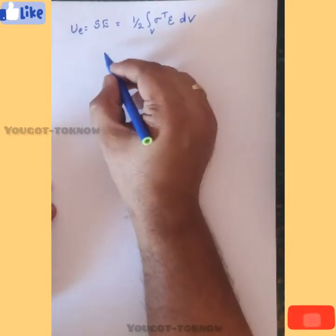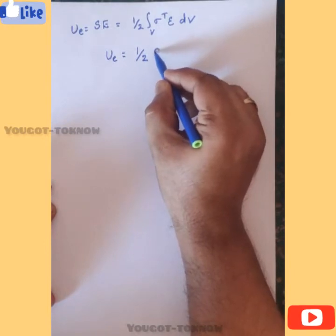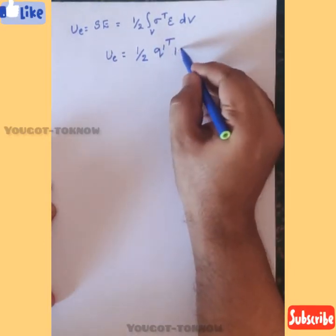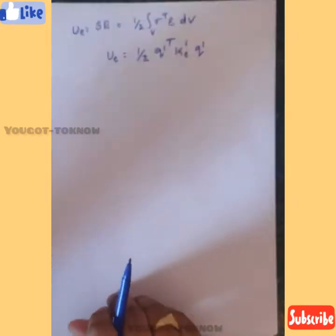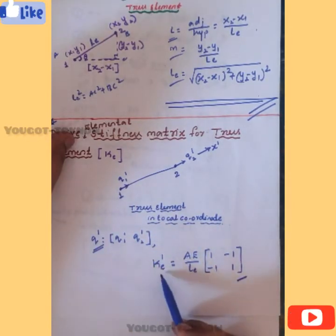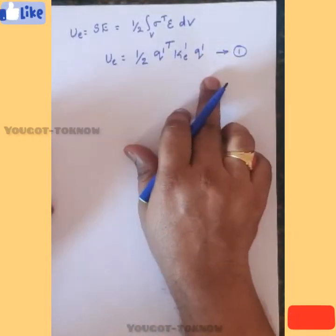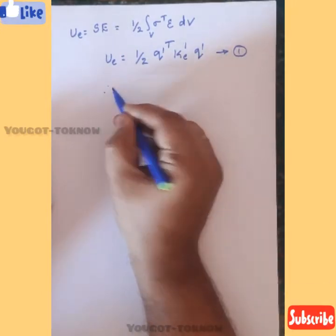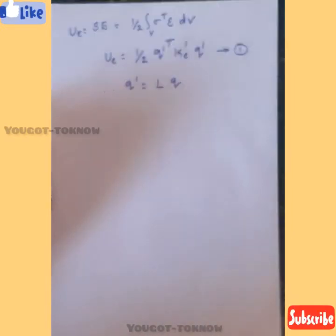We call this equation number one. Now, q_dash is in local coordinates, but our solution should be in the global coordinate system. We know the relation between q and q_dash: q_dash equals L times q. Now replace q_dash with L*q in equation one.